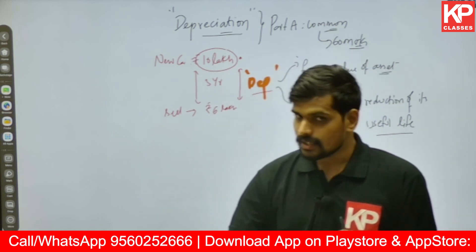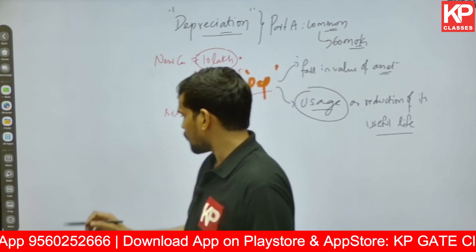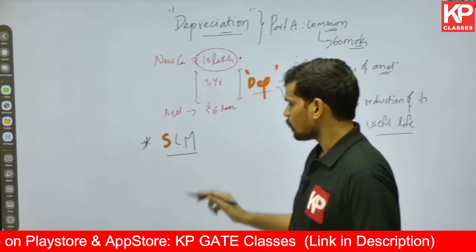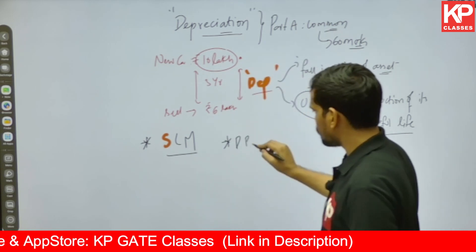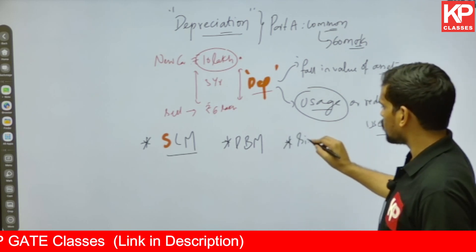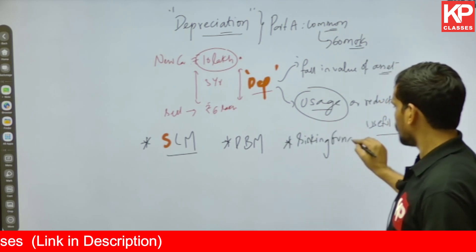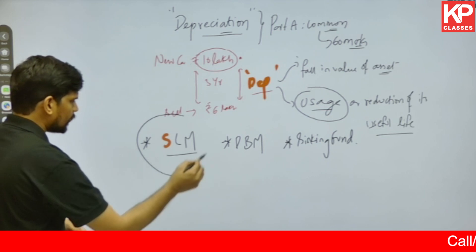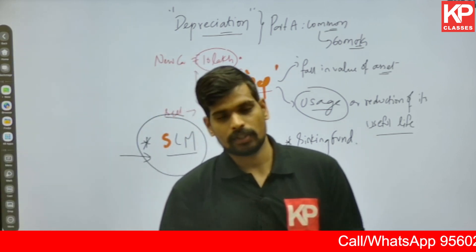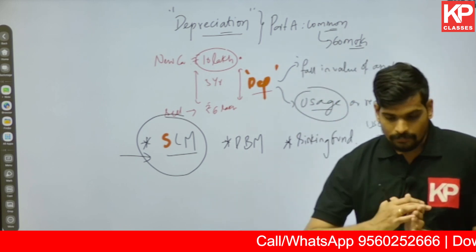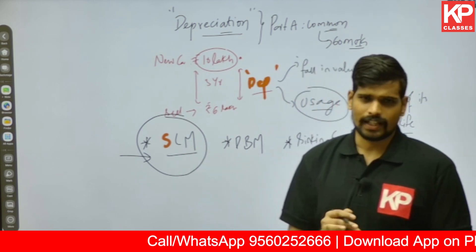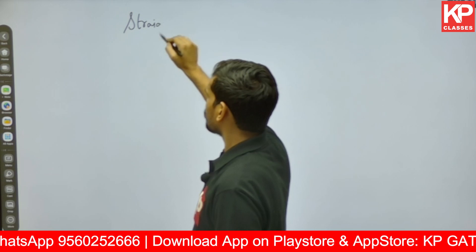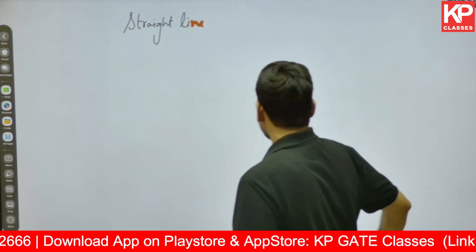Now, how do you account for depreciation? There are various methods. At GATE Architecture level, you can learn mainly two or three basic methods: the Straight Line Method (SLM), the Diminishing Balance Method — also called the Declining Balance or Reducing Balance Method — and the Sinking Fund Method. Questions can be asked from all three areas. However, today's session will be focused on the Straight Line Method of depreciation, which has also been asked recently in numerical form.